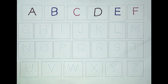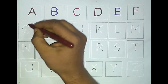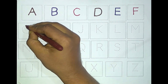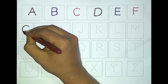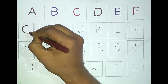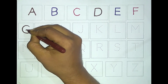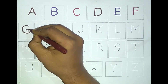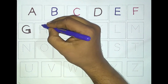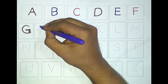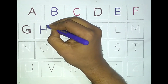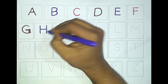Brown color. G, G for grapes. Blue color. H, H for hand.